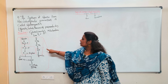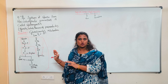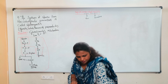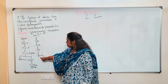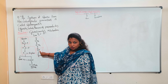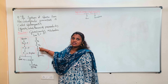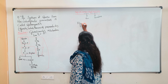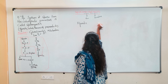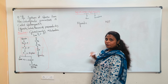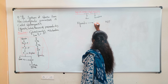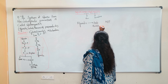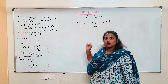When we reverse glycolysis to perform gluconeogenesis, we need alternate arrangements for those three irreversible steps. Starting from pyruvate, the first irreversible step is pyruvate to phosphoenol pyruvate, which is irreversible. So we need an alternate arrangement: pyruvate will first convert to oxaloacetate, and then oxaloacetate will be converted to phosphoenol pyruvate.